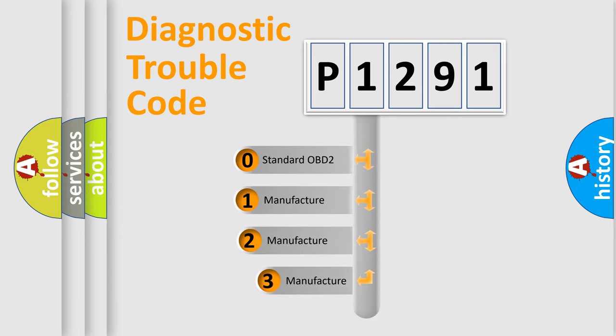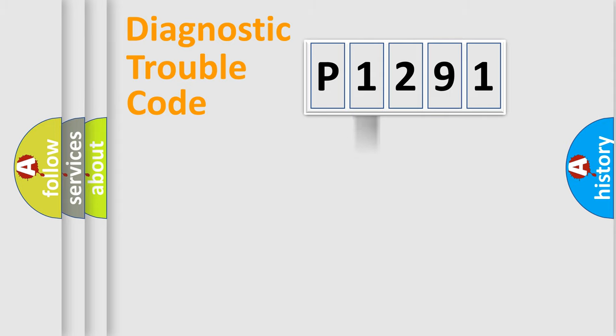If the second character is expressed as zero, it is a standardized error. In the case of numbers 1, 2, or 3, it is a more specific expression of the car-specific error.